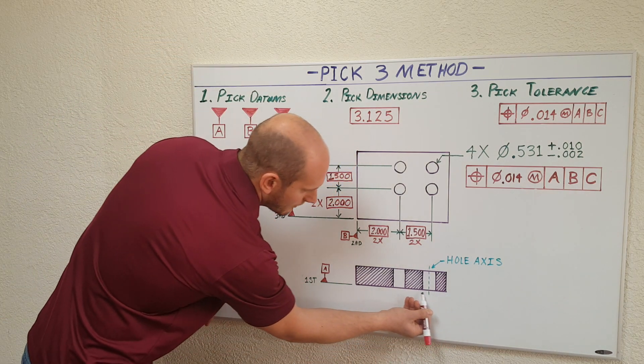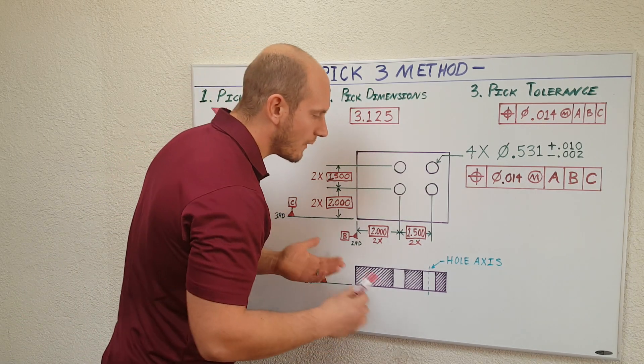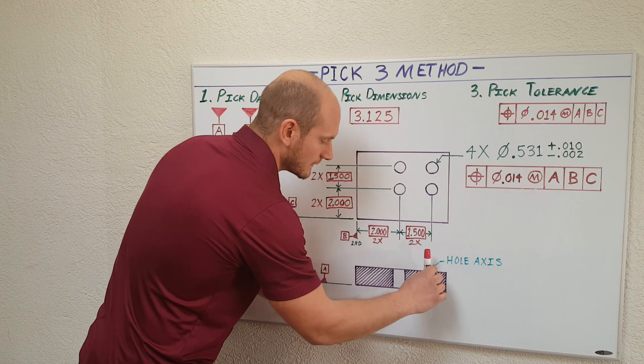The first datum I'm going to pick, I'm going to pick this bottom surface of this plate down here. What I'm doing is I'm telling the machinist, I want the hole axes to be perpendicular to that bottom surface.